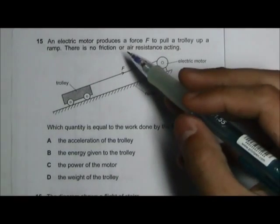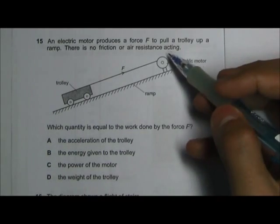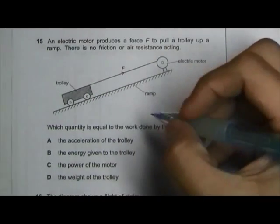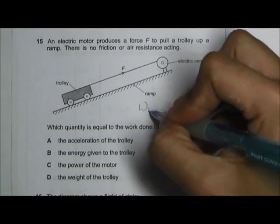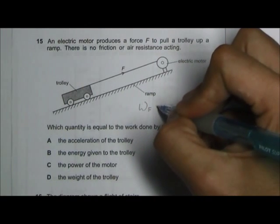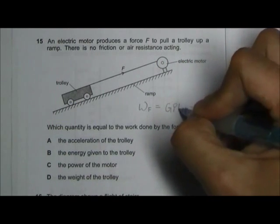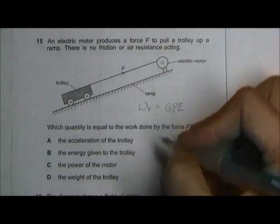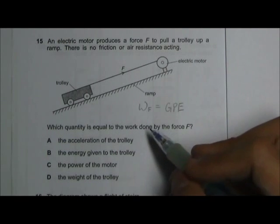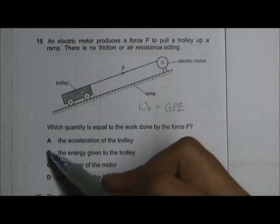Okay, since there is no friction or air resistance acting on the trolley, the work done by the force F is converted to the gravitational potential energy of the trolley. So in this case it will be B.